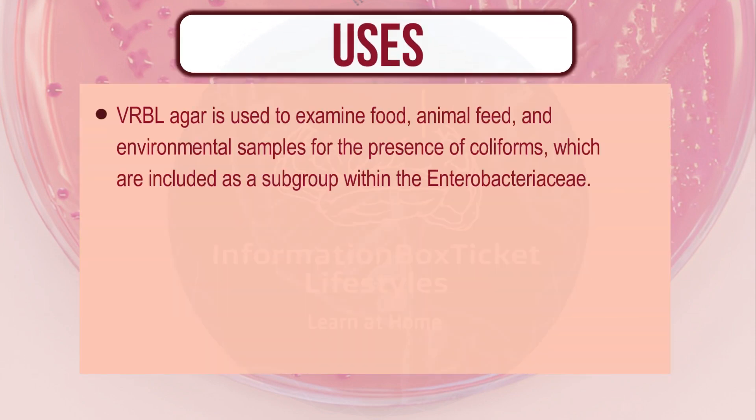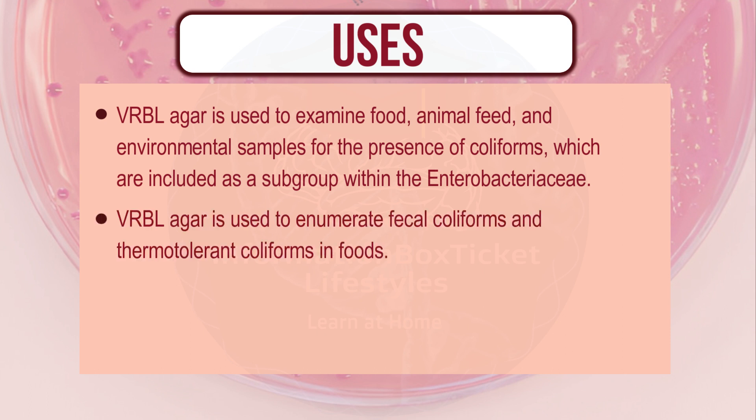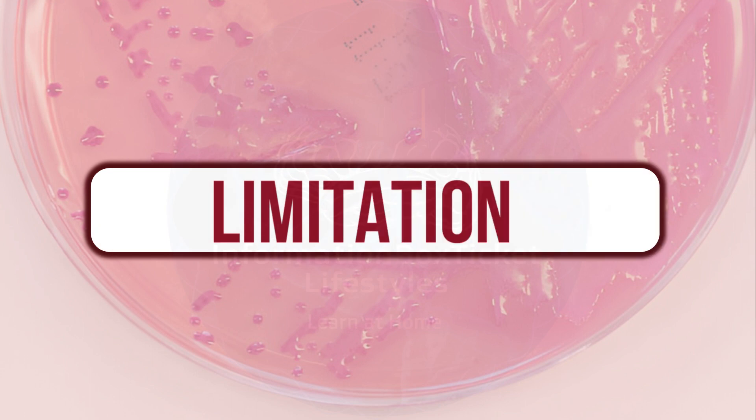Uses of VRBL medium: VRBL agar is used to examine food, animal feed, and environmental samples for the presence of coliforms, which are included as a subgroup within the Enterobacteriaceae. It is also used to enumerate fecal coliforms and thermotolerant coliforms in foods.